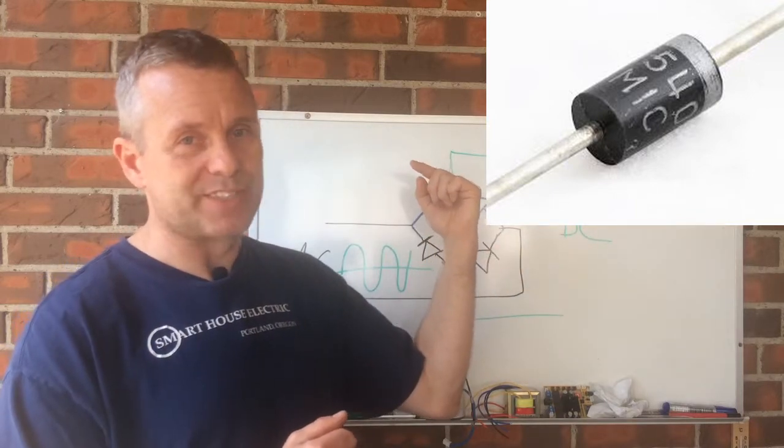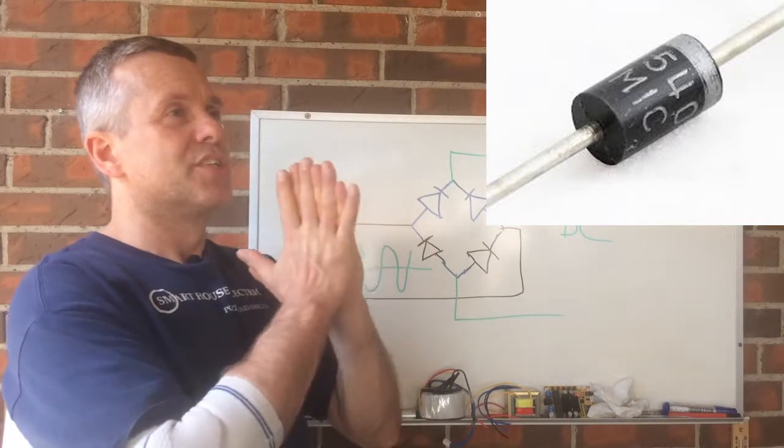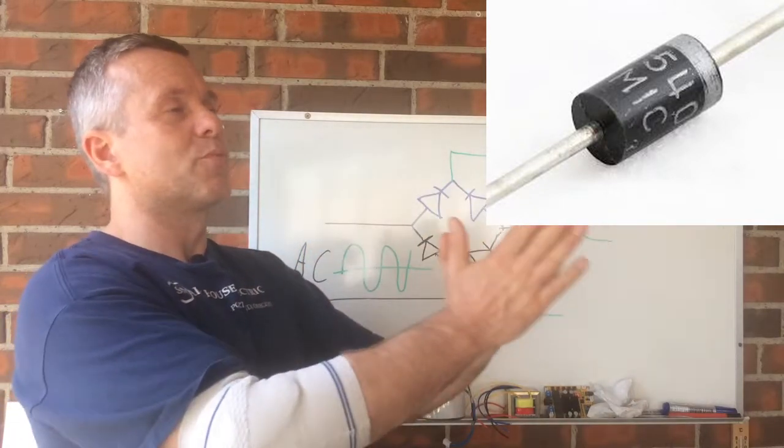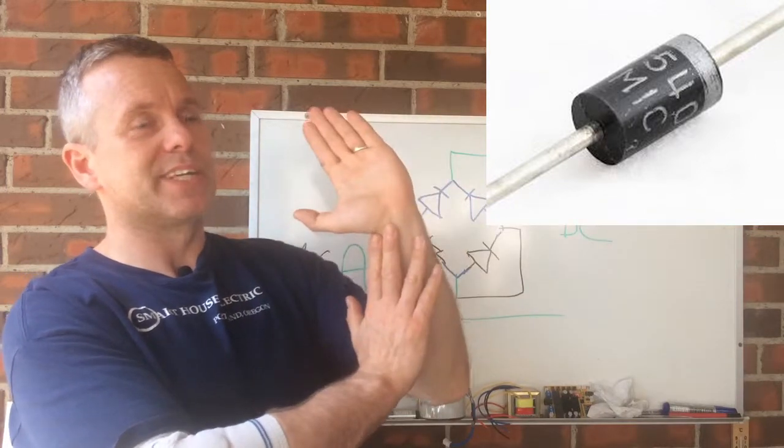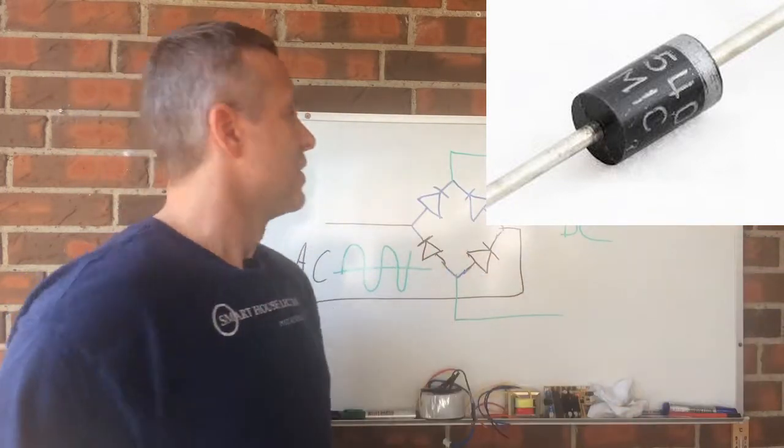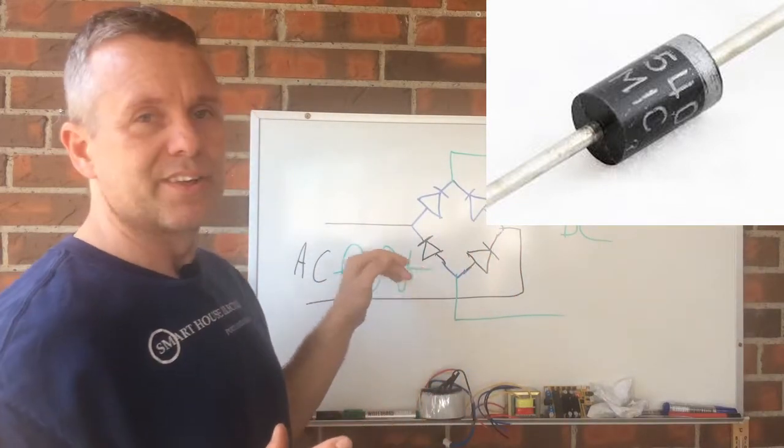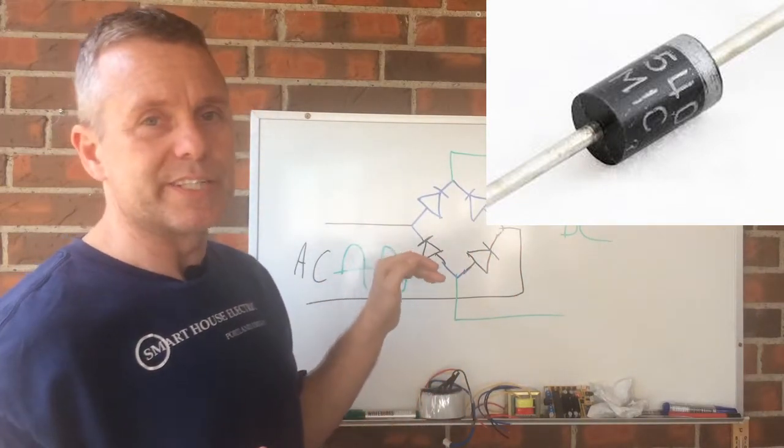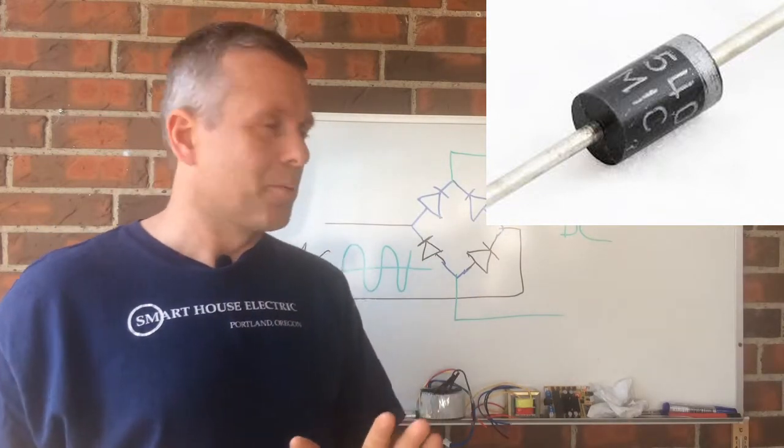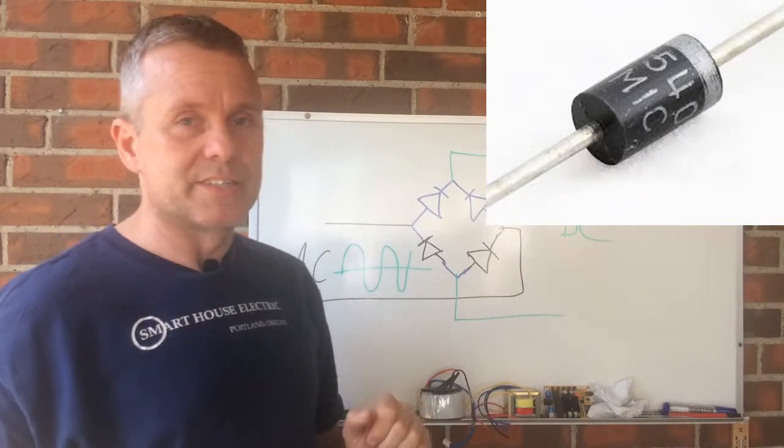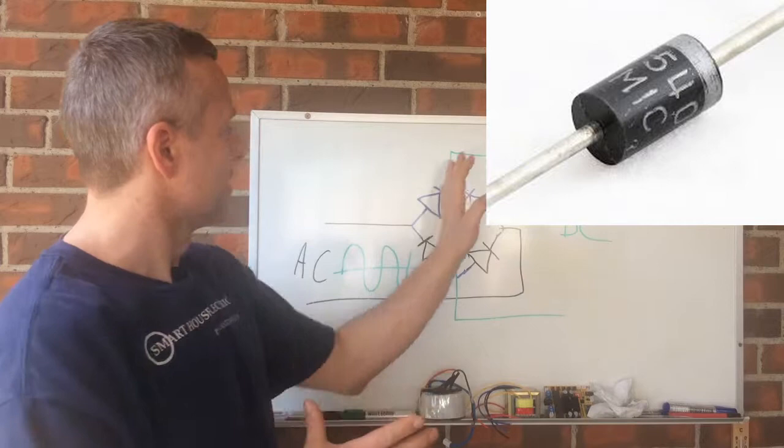So you can kind of decide what direction the power should be and block the other way. That's what you do with it. So if you can successfully control what's happening down here, you can do that by making this full wave bridge rectifier system that consists of four of these diodes.